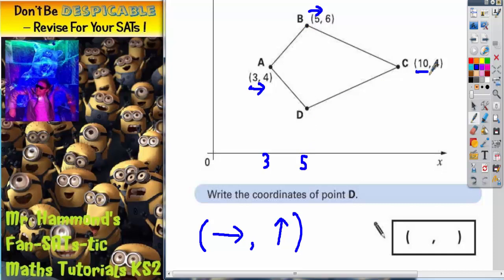And C must be 10 along. So from 0 all the way along to the bottom here, it must be 10 so that we get level with C. So A is 3 along, B is 5 along, C is 10 along. We've got some numbers along the bottom to help us.